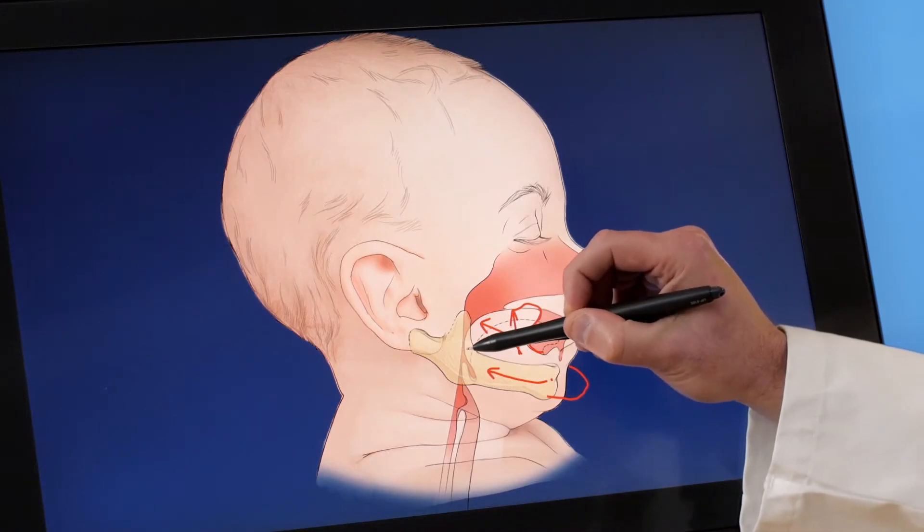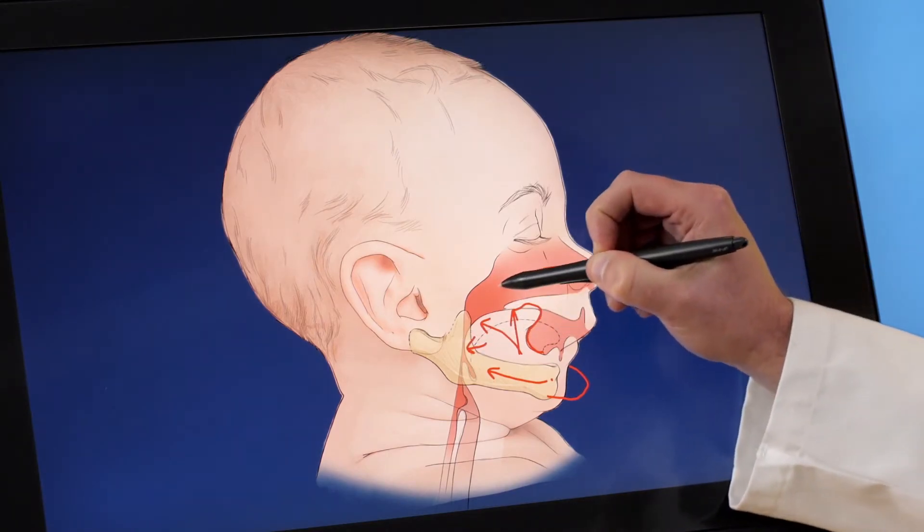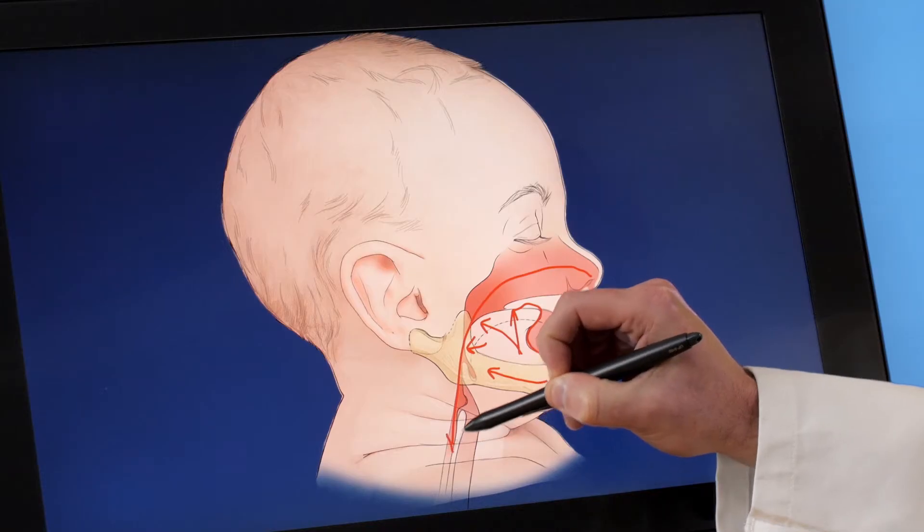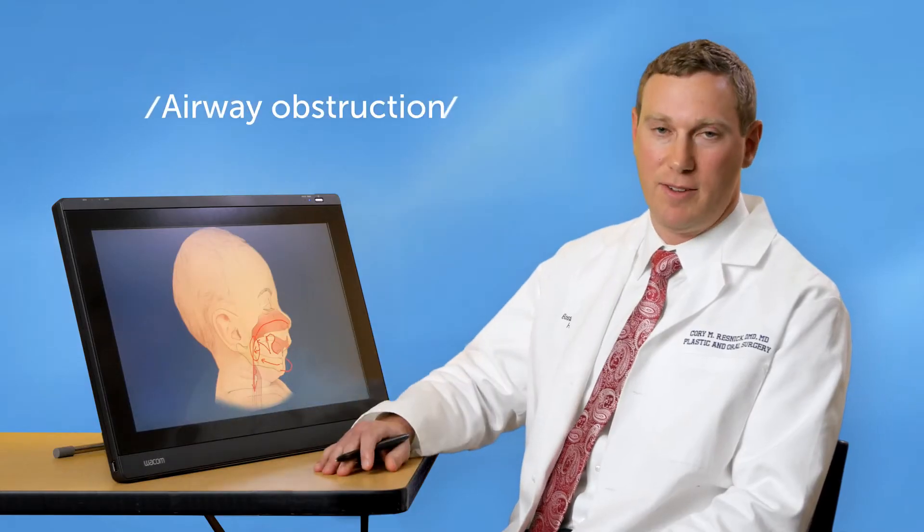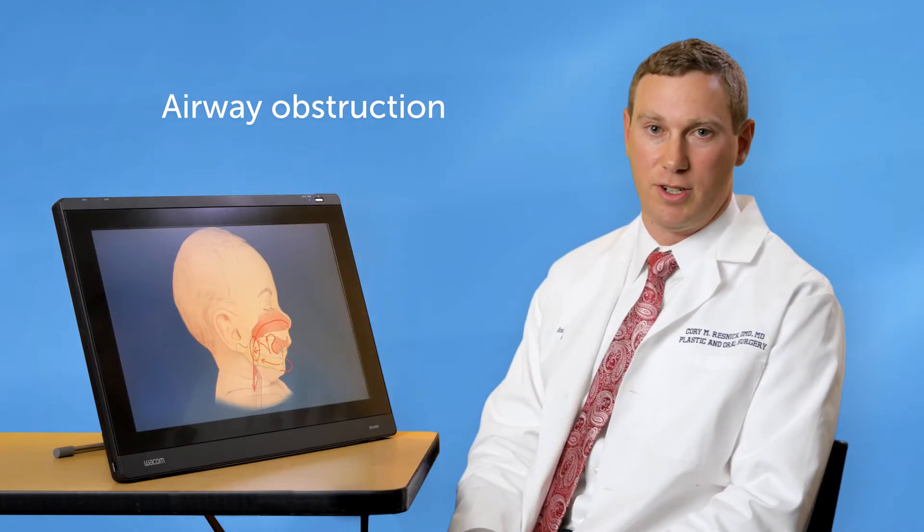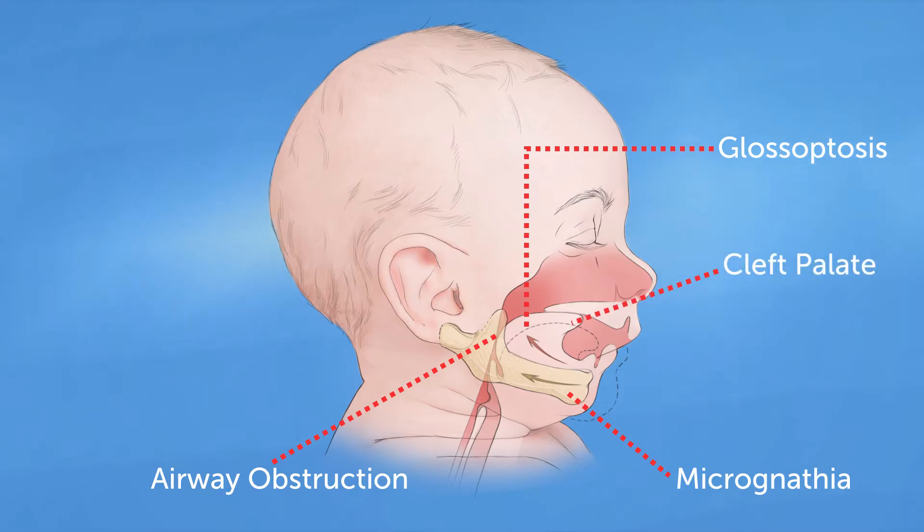As a result of this backwards position of the tongue, air cannot always freely pass from the nose into the lungs. This airway obstruction at the level of the back of the tongue is the third feature of Robins Sequence. Many babies with Robins Sequence will also have a cleft in the palate, though this is not a defining feature.